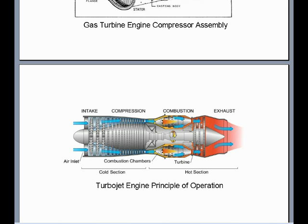When sufficient constant pressure is reached, the spool will then suddenly increase in RPM and the engine is said to be lit. This is when the starter and the spark igniter are disengaged, and the temperature required to keep the kerosene jet fuel lit is derived from the heated air compression from the compressor, which derives its power from thermal energy absorbed by the turbines.